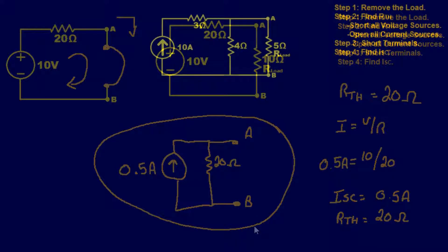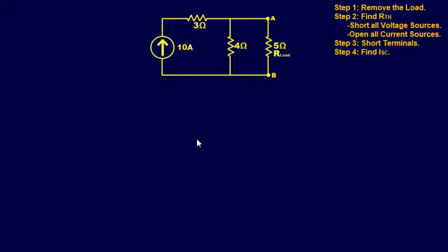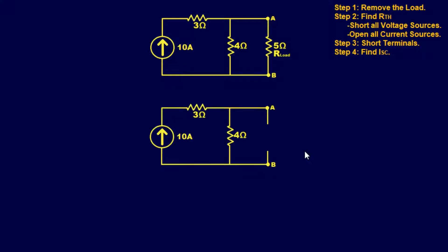Let's go on to a slightly harder problem. This next problem is a little more difficult but we'll work through it just as easily. Instead of a voltage source we have a current source this time, and we're going to follow the same steps as before. Step one: remove the load. Step two: find the resistance between points A and B by shorting voltage sources and opening current sources. There are no voltage sources, but we do have a current source, so we remove it.